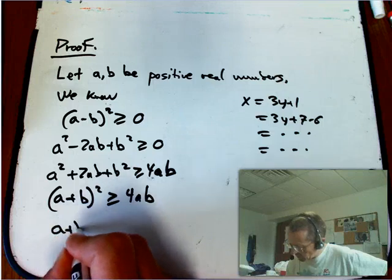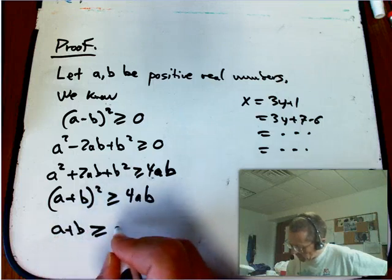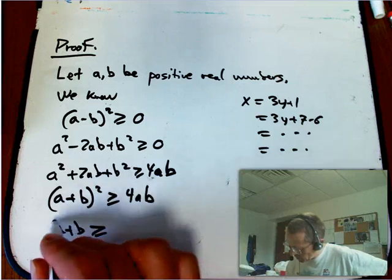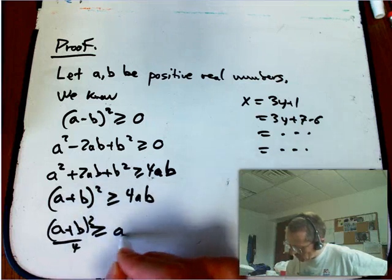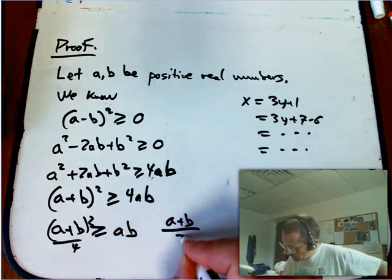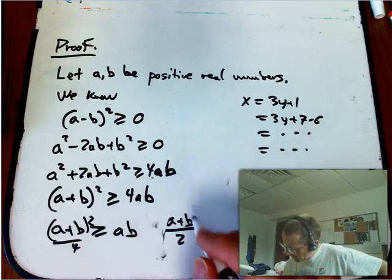Now I'm going to square root both sides. Now I'm going to divide by 4. Just kidding. (a+b)²/4 is greater than ab. And now I'm going to square root both sides. Is greater than or equal to the square root of ab.